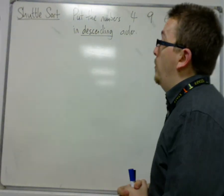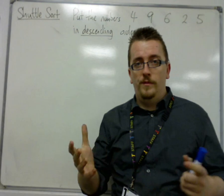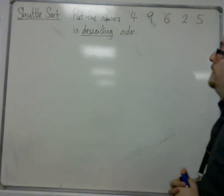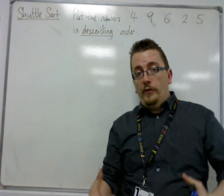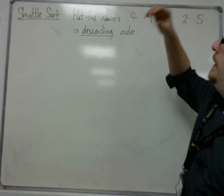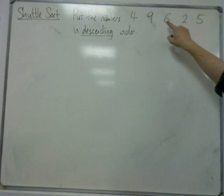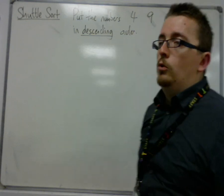Apologies for the video beforehand. This is its replacement. We're working through a second example of shuttle sort, and we're going to put these numbers 4, 9, 6, 2, 5 in descending order.